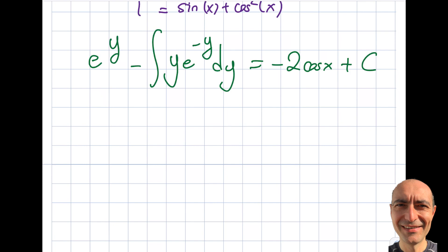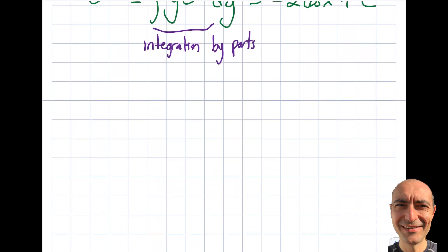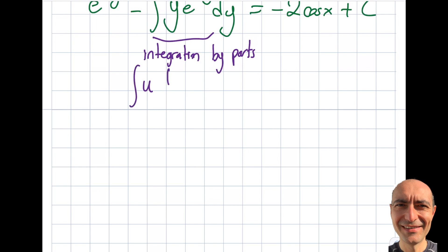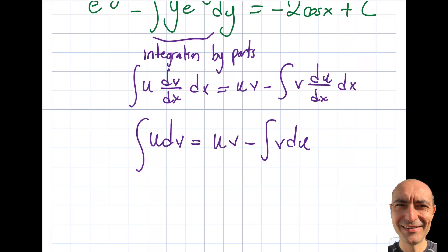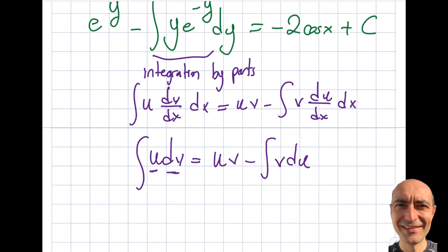This requires integration by parts. The formula is: ∫u dv = uv − ∫v du. I choose u = y and dv = e^(−y) dy. The key tactic is: wherever you have a power of a variable like y, assign that as u so that taking its derivative reduces the power. Taking the derivative gives du = dy, and integrating dv gives v = −e^(−y).